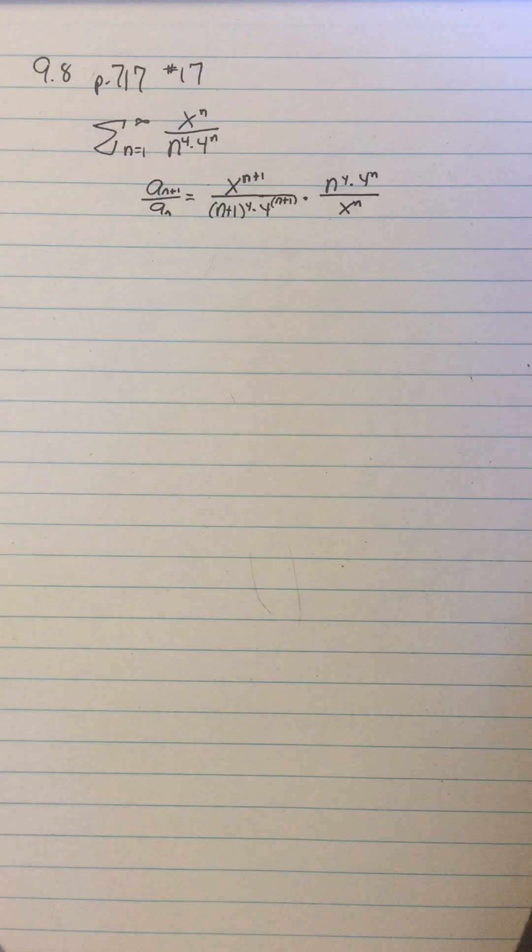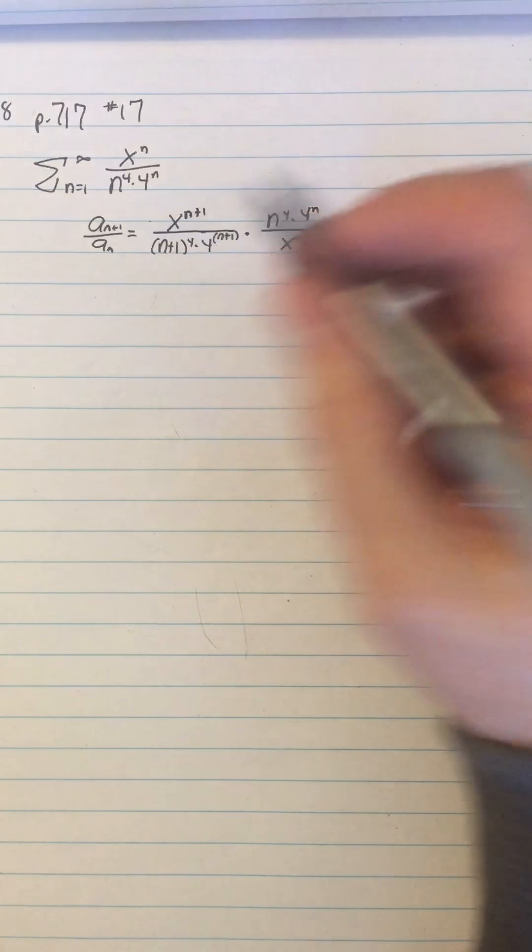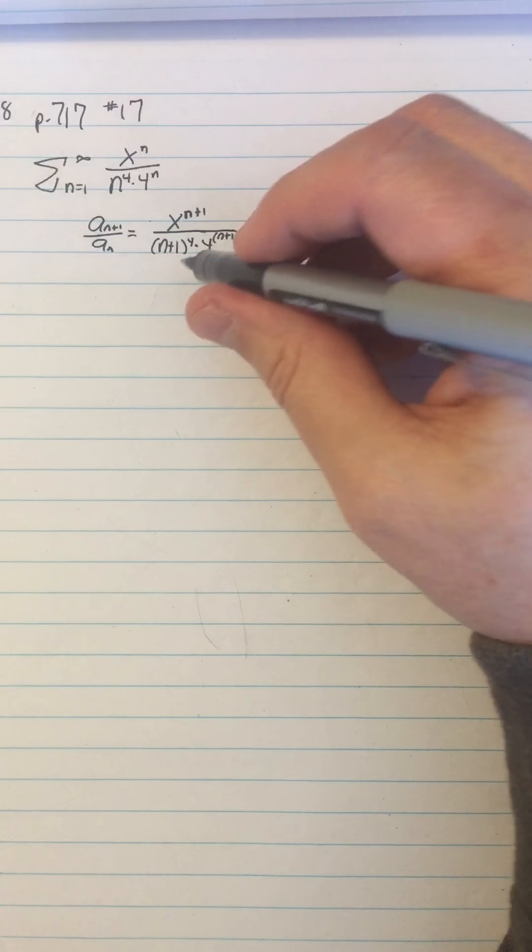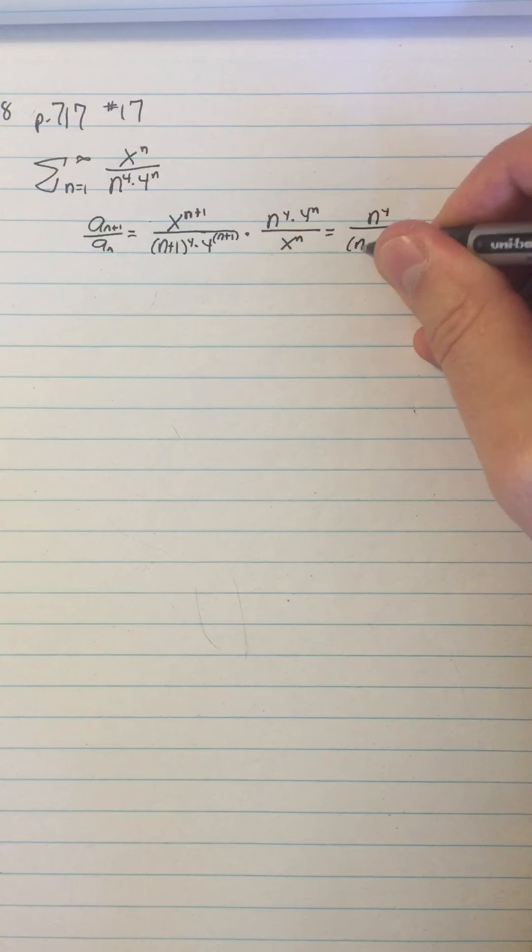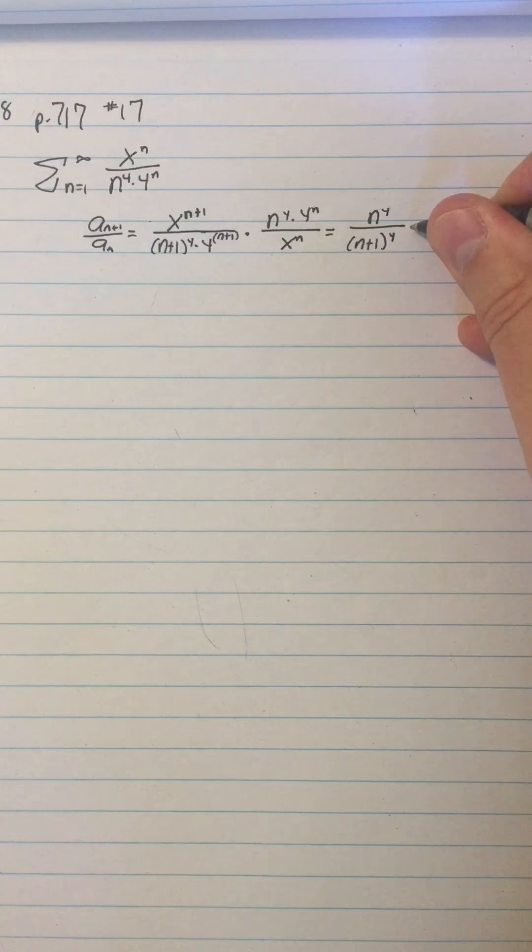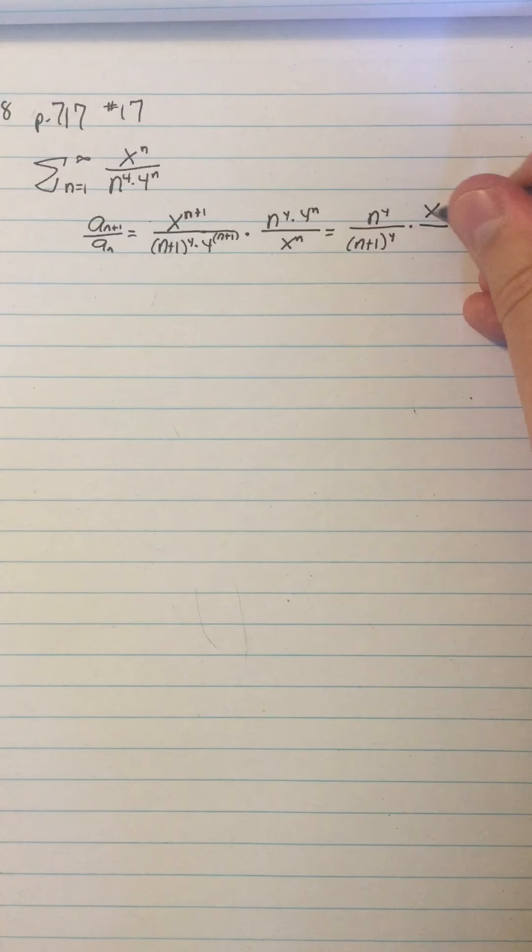So then I just look and see what cancels and what should I lump together. So I should probably put the n to the fourth and the (n+1) to the fourth together. So I have n to the fourth over (n+1) to the fourth, and then I have x on the top and I have 4 on the bottom, and that's what I got.